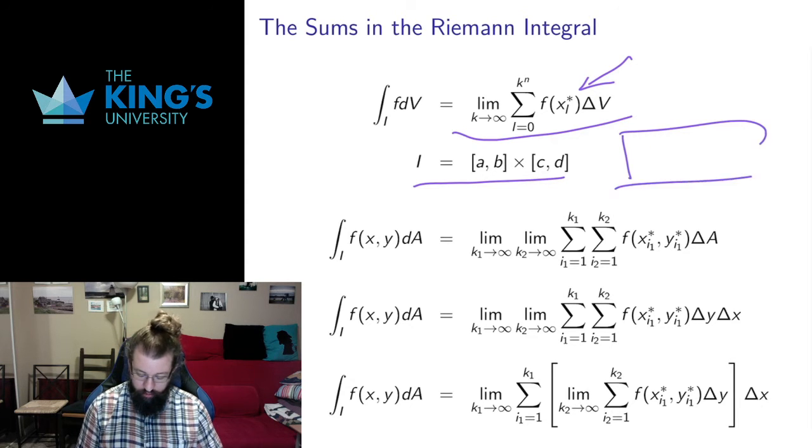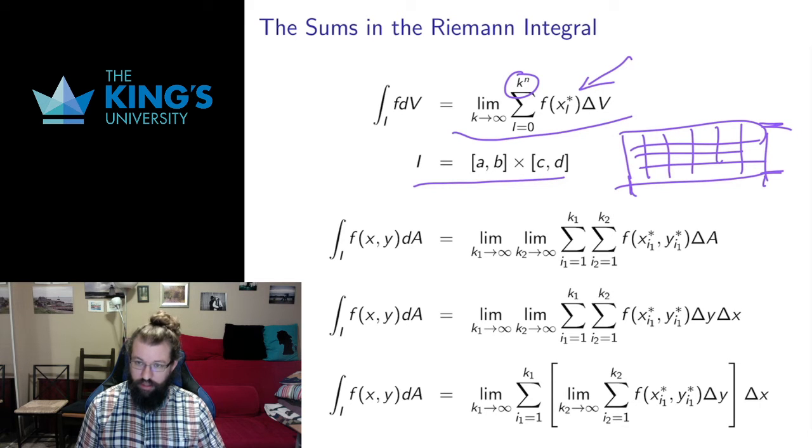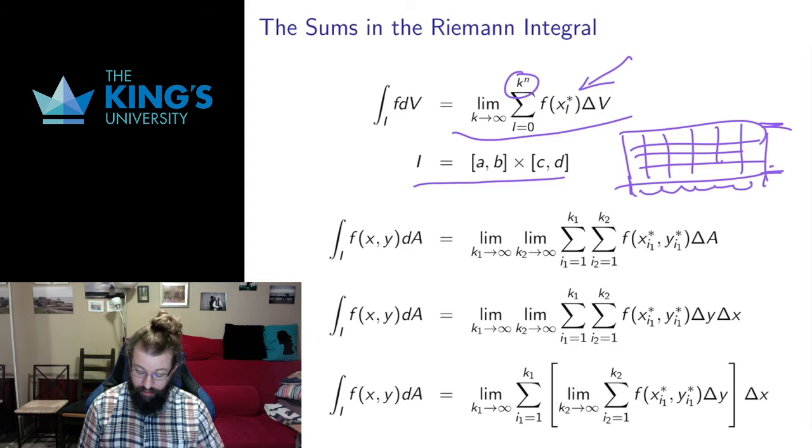So I'm going to take this general definition and specify just R2 to try and make the notation a little bit easier to handle. So I've got an interval in R2, so it's got some height and some width, and I'm dividing it up into k squared pieces. So this k to the n, n is 2 for R2. I'm going to have k squared pieces. x is going from a to b, y is going to go from c to d.